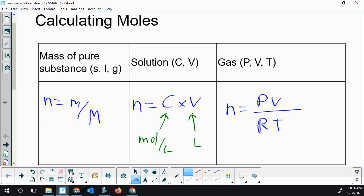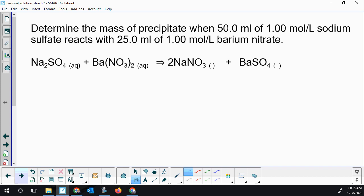As I roll through, I'll be using whatever strategy is appropriate given the information in the question. Start a practice. We're asked to determine the mass of precipitate when 50 mL of 1.00 mol/L sodium sulfate reacts with 25 mL of 1.00 mol/L barium nitrate.